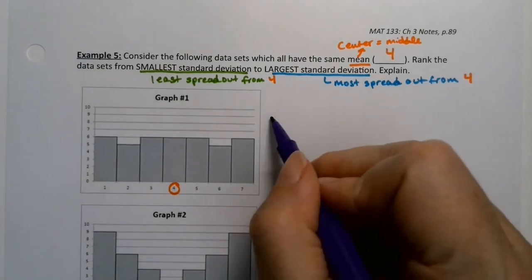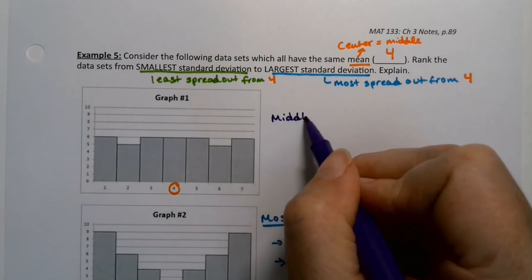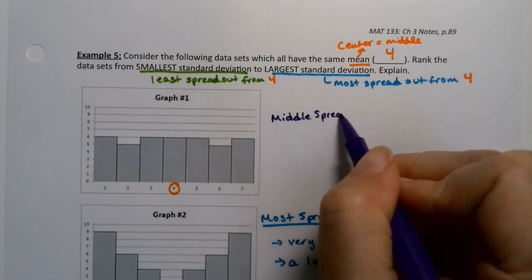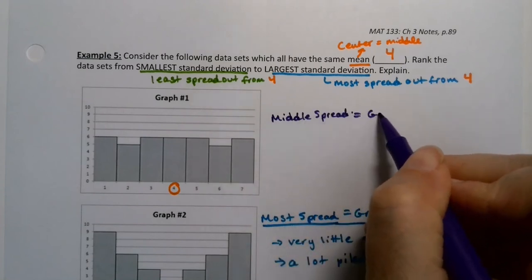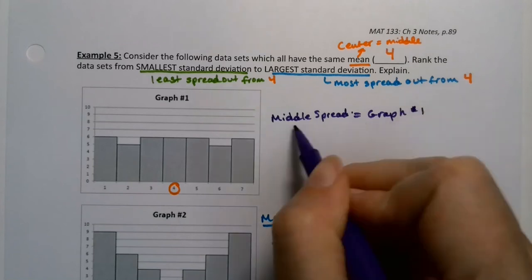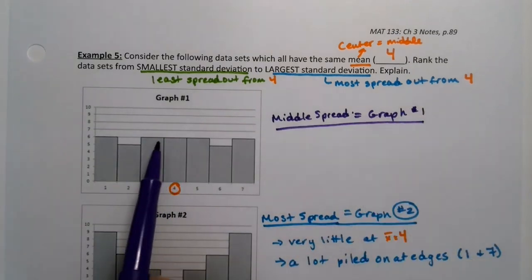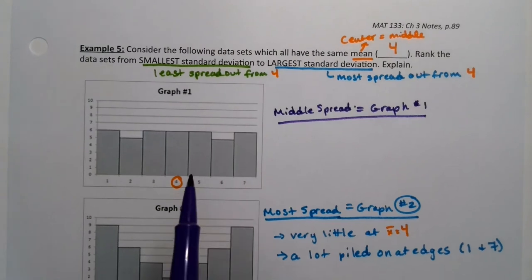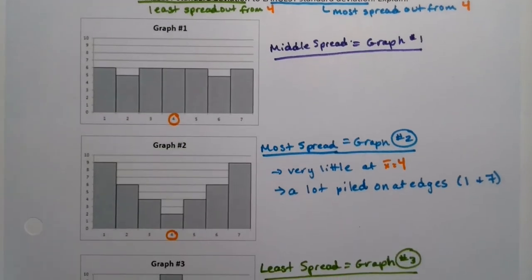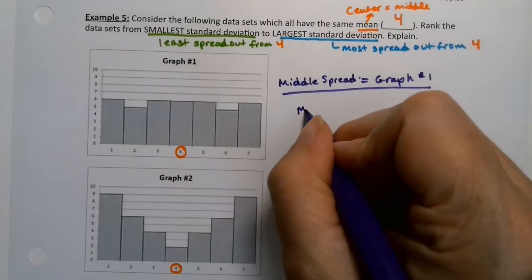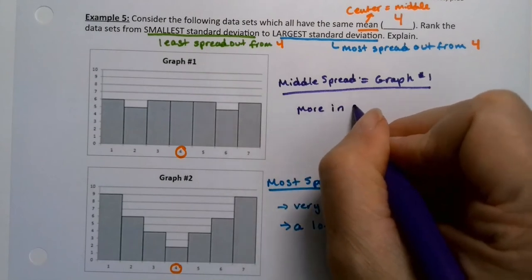And that means that graph number one is the middle child. So this is the middle amount of spread. Right? It has more in the center than two did, but less in the center than three did.